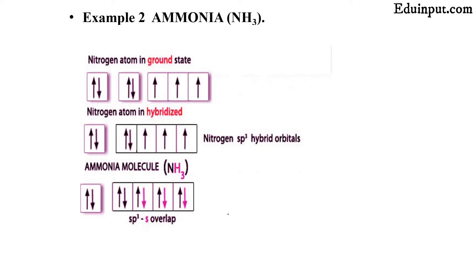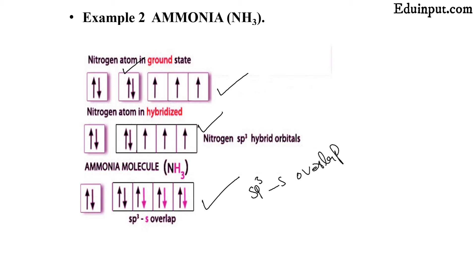The next example is ammonia. Nitrogen has atomic number 7. In the ground state electronic configuration, nitrogen has three valence electrons available for bonding. Nitrogen can form three or five bonds, but most commonly forms three bonds, with two extra electrons remaining as a lone pair. This is the ground state electronic configuration for nitrogen, and these are the hybridized orbitals of nitrogen. The three hydrogen atoms bond via sp3 s-orbital overlap.